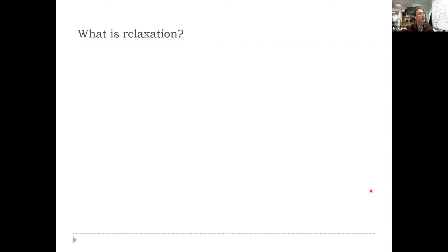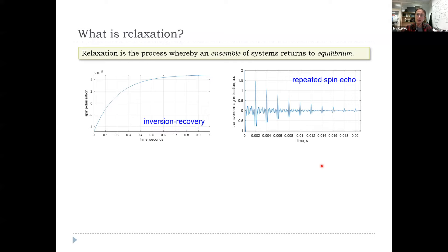Starting with what is relaxation as applied to spins, it is essentially a thermodynamic notion. There's no such thing, at least thermodynamically, as relaxation for a single spin. It has to be an ensemble, and it's a process whereby an ensemble of spins returns to thermal equilibrium.